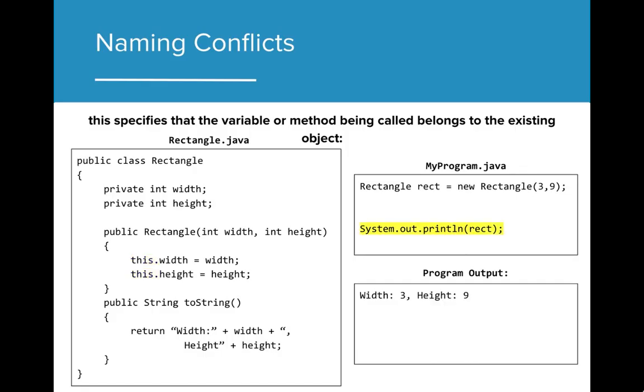With the simple change, the program outputs the expected result. This is because this.width and this.height are calling the instance variables. This.width and the formal parameter width are two distinct variables and thus do not have a naming conflict in regards to scope.